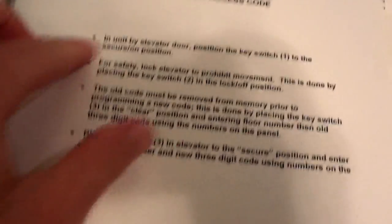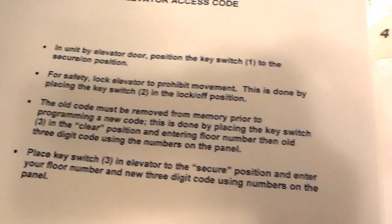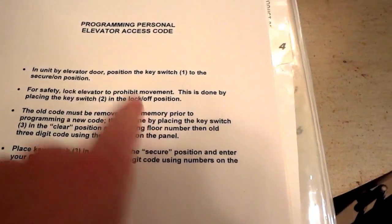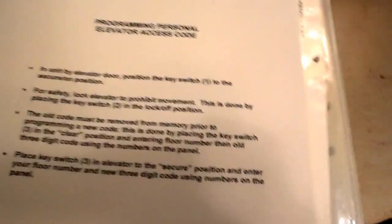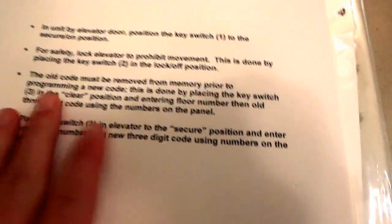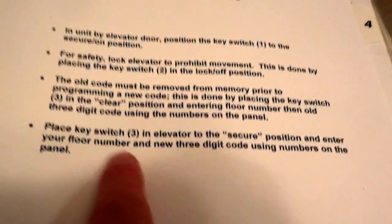Right here in my room — I'm gonna show you how to program an elevator access code. Just pause if you want to read it. It involves a key, knowing the previous code, and a new code. Basically it's a four-digit number: the first digit is the floor you want to key off, and the last three are a number of your choosing. Simple as that — it involves a key, switching it to a clear position and then to a secure position.